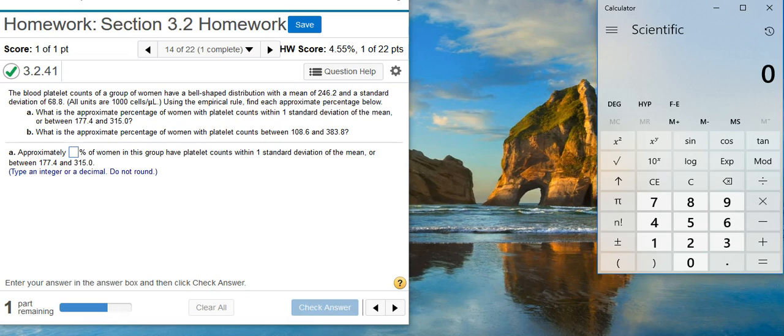Here's our problem statement. The blood platelet counts of a group of women have a bell-shaped distribution with a mean of 246.2 and a standard deviation of 68.8. All units are 1,000 cells per microliter. Using the empirical rule, find each approximate percentage below.